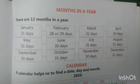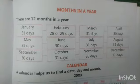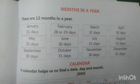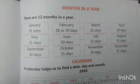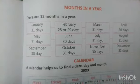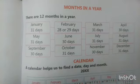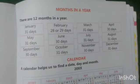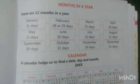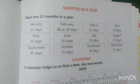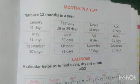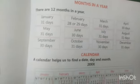Hello and welcome to mathematics class. Let's start a new topic of Chapter 9. This is the time and calendar chapter, and the topic is months in a year. There are 12 months in a year.